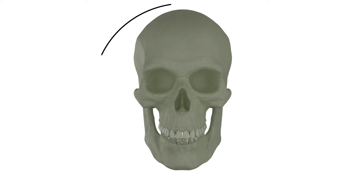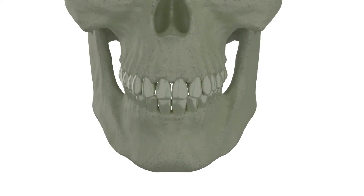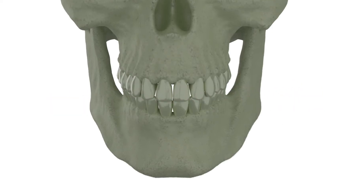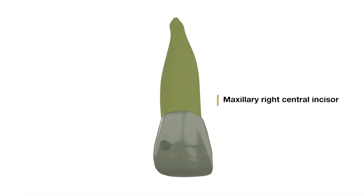If you'd like to know more about the channel, check the top right corner. Now let's move ahead, but before jumping into the anatomy, let's start by discussing a few basic terminologies associated with individual teeth when we are trying to convey a specific part across the room. Let me ask you a question: how will you describe the part specified on the maxillary right central incisor to your fellow dentist? By the end of this video, you will be able to answer this question.